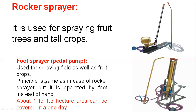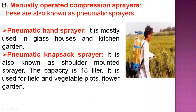The foot sprayer is used for spraying field crops as well as fruit crops. The principle and mechanism are the same as the rocker sprayer, but it is operated by foot instead of hand. There is no built-in tank; the suction tube is dipped into a liquid container. About 1 to 1.5 hectares can be covered in one day, and two persons are required, as also with the rocker sprayer.